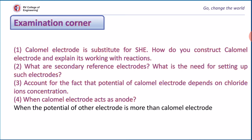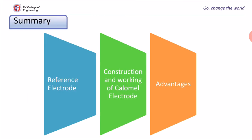Exam corner: The first question is related to the construction and working of the calomel electrode — draw a neat labelled diagram and describe its working as both cathode and anode. The second question covers the necessity of a secondary reference electrode — write the limitations of the SHE as your answer. The last point: the calomel electrode acts as an anode when the potential of the other electrode is greater than that of the calomel electrode. Summary: today we learned different types of electrodes, what reference electrodes are, conditions for a reference electrode, construction and working of the calomel electrode, and its advantages and use in measuring electrode potential.